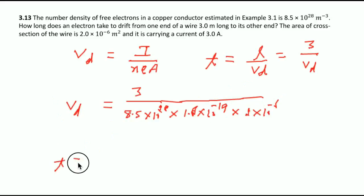T by 3 and this is 3, so all will come up - 8.5 into 1.6 into 2. Here 10^28 is given, so this is 3, 3 cancel. If you multiply then it will come 27, so 27.2×10^3.